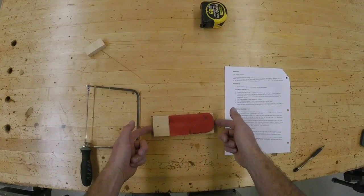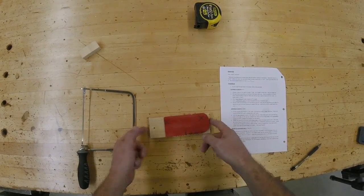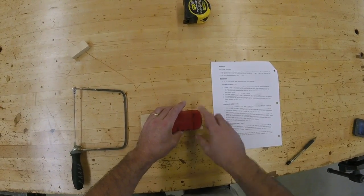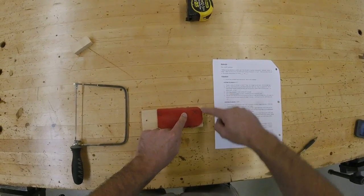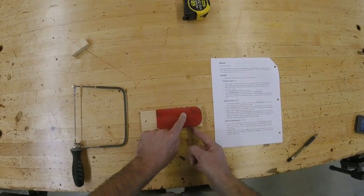Remember, our board that we're making needs to stay 6 3/4 inches long. We're going to line up this end right here. There's a 3/4 inch radius and a 1 inch radius.